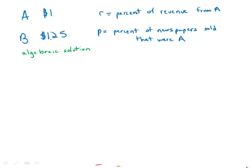Last Sunday, a certain store sold copies of Newspaper A for $1 each and copies of Newspaper B for $1.25 each, and the store sold no other newspapers that day. If R percent of the store's revenue from newspaper sales was from Newspaper A, and if P percent of the papers sold at the store were Newspaper A, what expresses R in terms of P?